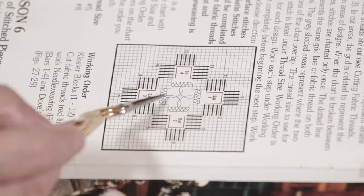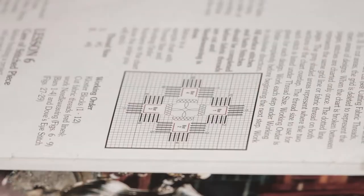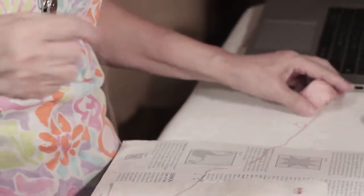So each stitch, each design on a hardanger has a name. They call it the dove's eye. So what we'll do is, again, what we use for our cluster block, we use the thicker thread, size eight. Size eight is for the cluster block. So I'll cut a little bit more.